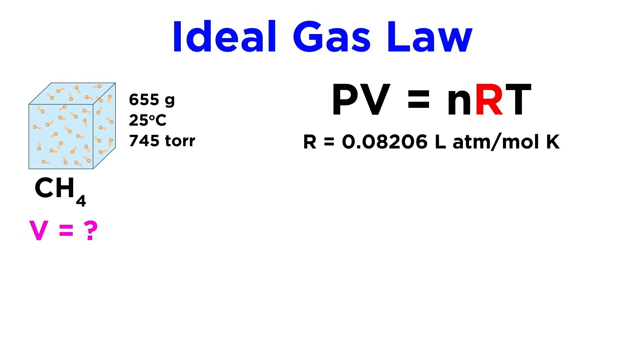First, let's make sure we have the right units. Looking at our gas constant, we will typically want to use a value for R that is 0.08206 liters atmospheres per mole kelvin.